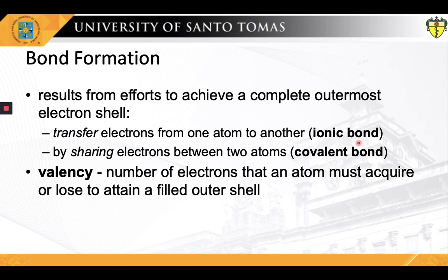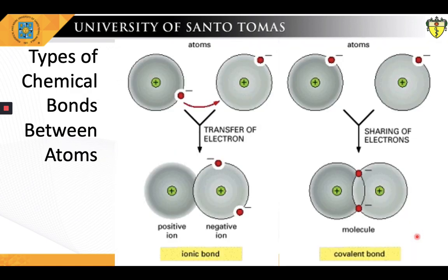On the other hand, electrons can be shared between two atoms, which leads to the formation of a covalent bond. In chemistry, the valence or valency of an element is a measure of its combining power with other atoms when it forms chemical compounds or molecules — simply stated, valency refers to the number of electrons that an atom must acquire or lose to attain a filled outer shell. The illustration on the left shows an ionic bond formed when electrons are transferred from one atom to another, while a covalent bond is formed when electrons are shared between atoms.